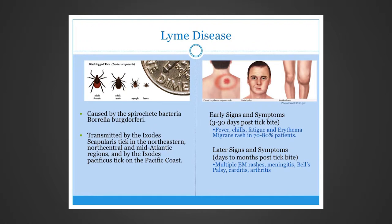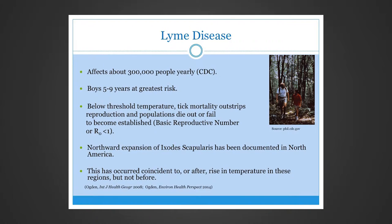Later signs and symptoms occur days to months after the tick bite, and include multiple erythema migrans rashes, meningitis, Bell's palsy, carditis, and arthritis, primarily of the large joints like the knee. Lyme disease affects about 300,000 people yearly according to the CDC, although the majority of cases are not reported. Boys ages five to nine are at the greatest risk.